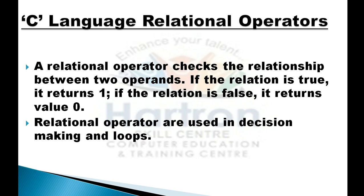When a relational operator checks the relationship between two operands, if the relationship is true, it returns one. If the relationship is false, it returns zero. For example, if a is greater than b — if a equals 4 and b equals 5, then a is not greater than b, so it will display false (zero). But if a equals 5 and b equals 4, it is true because a is greater than b, so it will display one.